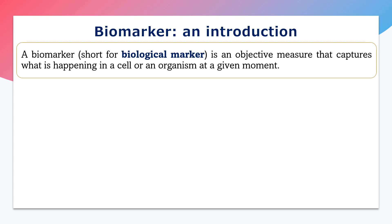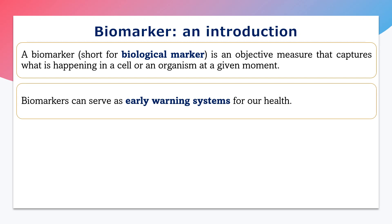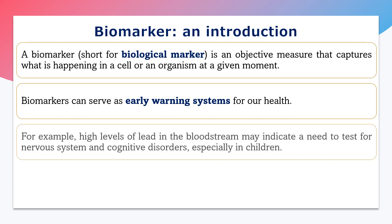Biomarkers are commonly also known as biological markers. They are measurable biomolecules which capture what is exactly happening in our body, in our cells, in tissues, or in the whole organism. This normally gives us information about our body. Biomarkers also serve as an early warning system for our health, giving any kind of indication or information about our health.